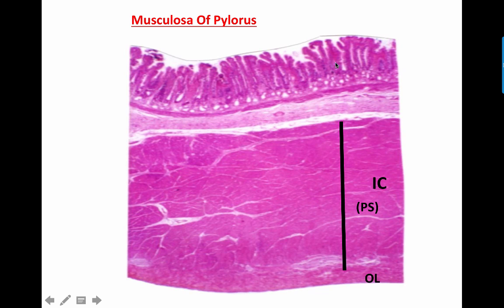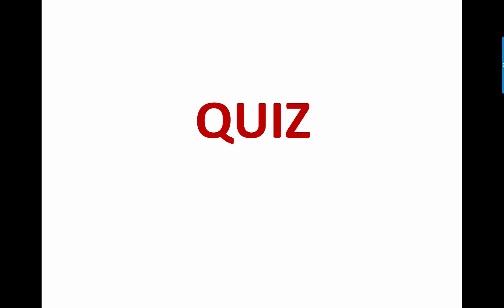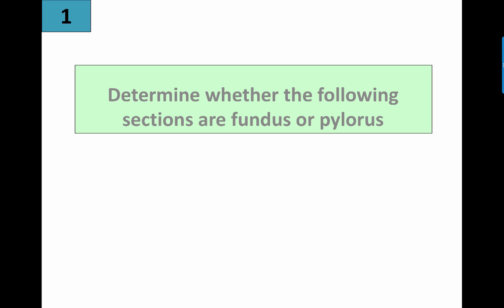A full picture of the pylorus shows: mucosa with pits and glands, muscularis mucosa, submucosa, and the muscularis. In the muscularis, there is a thick inner circular layer because it forms the pyloric sphincter, plus the outer longitudinal layer. There is no inner oblique layer at all in the pylorus. The inner circular layer is much thickened due to its role in forming the pyloric sphincter.